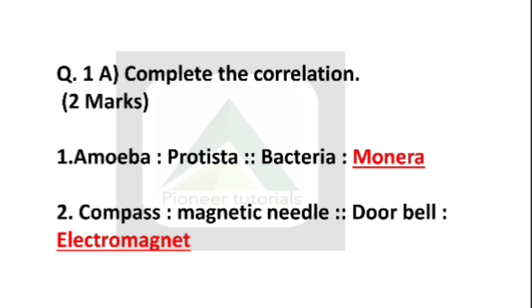Question number 1A: Complete the correlation. Amoeba is to Protista as Bacteria is to Monera. Compass is to Magnetic Needle as Doorbell is to Electromagnet.